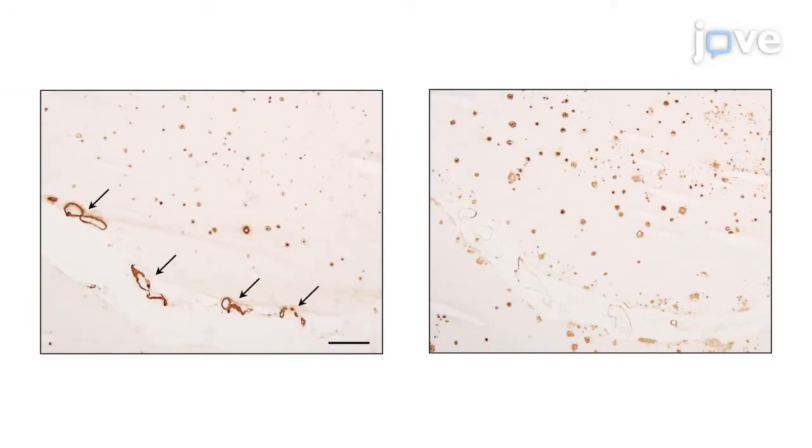Distributions of amyloid beta 1 to 40 and amyloid beta 1 to 42 were further validated with immunohistochemistry using adjacent frozen sections of the tissues. The anti-amyloid beta 1 to 40 antibody labeled CAA and revealed amyloid beta 1 to 40 is preferentially deposited in leptomeningeal blood vessels, which is in clear contrast to the distribution of amyloid beta 1 to 42 in the cerebral parenchyma as senile plaques.